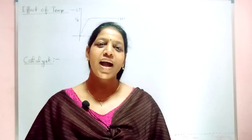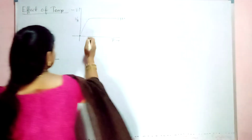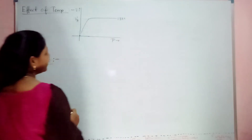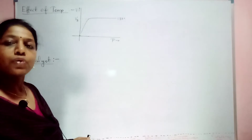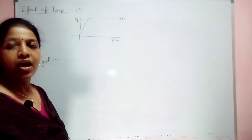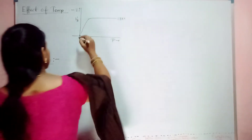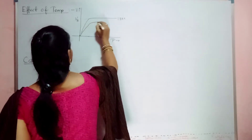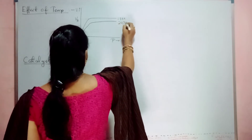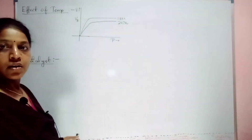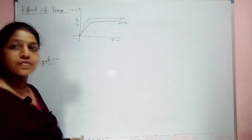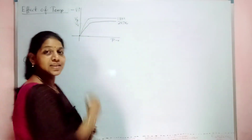Now let us see in terms of a graph. The x-axis is pressure and y-axis is volume adsorbed. Initially at 190 Kelvin, your volume is V3. Now increase the temperature to 247 Kelvin — you find that your volume is reduced to V2. Higher volume is now reduced to lower volume.